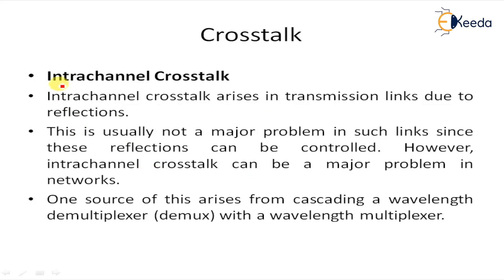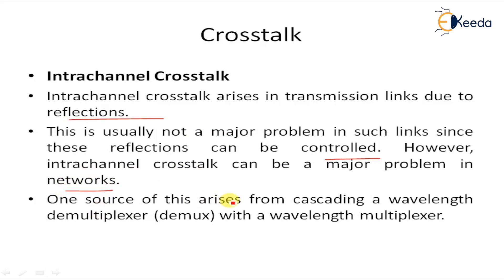Intra-channel cross-talk arises in transmission links due to reflections. This is usually not a major problem in links where reflections can be controlled. However, intra-channel cross-talk can be a major problem in networks. One source arises from cascading a wavelength demultiplexer with a wavelength multiplexer.